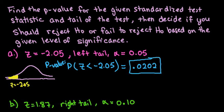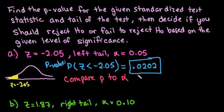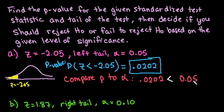Now what we can do to make our decision is compare our p-value to our alpha level. Our p-value is 0.0202, and our given alpha level is 0.05. We can see that 0.0202 is less than 0.05. Any time the p-value is less than your cutoff, that means it's more extreme than what you would like to see for typical values. So any time it is less than, we reject the null hypothesis.